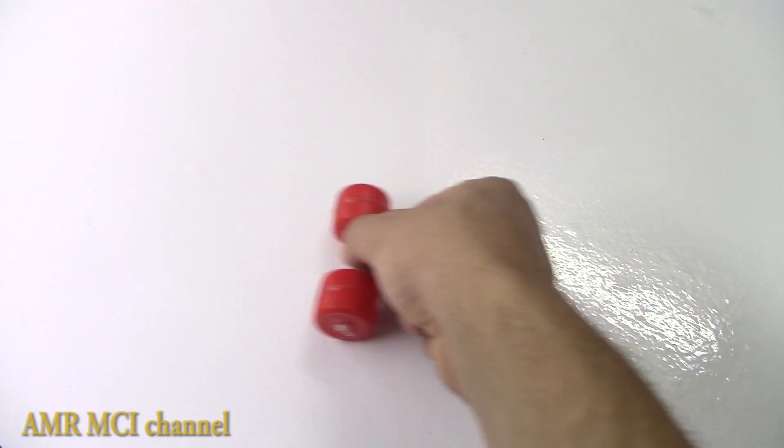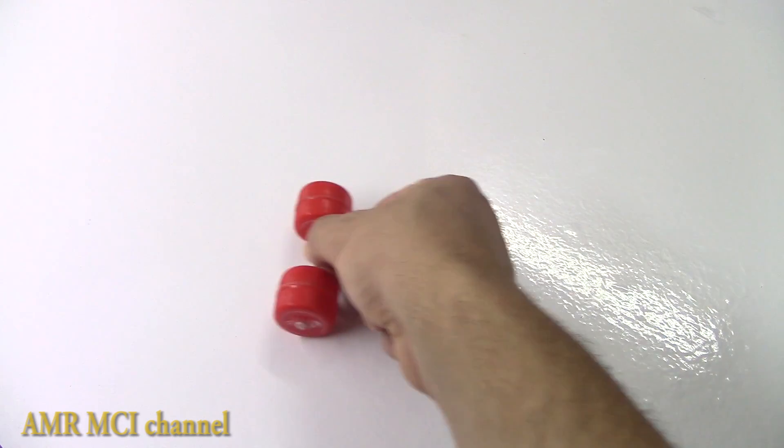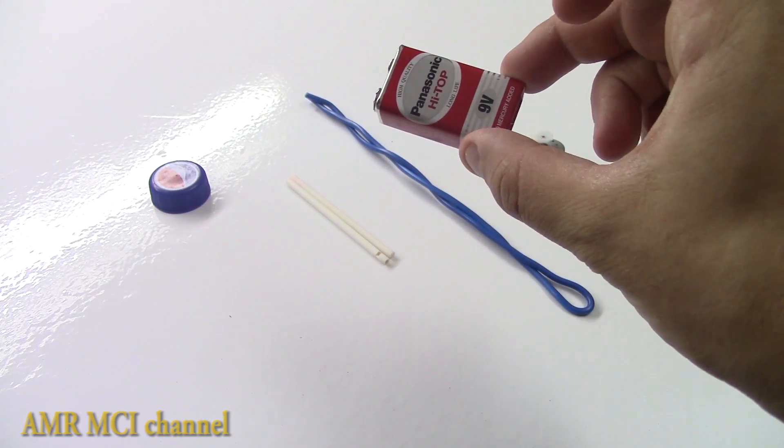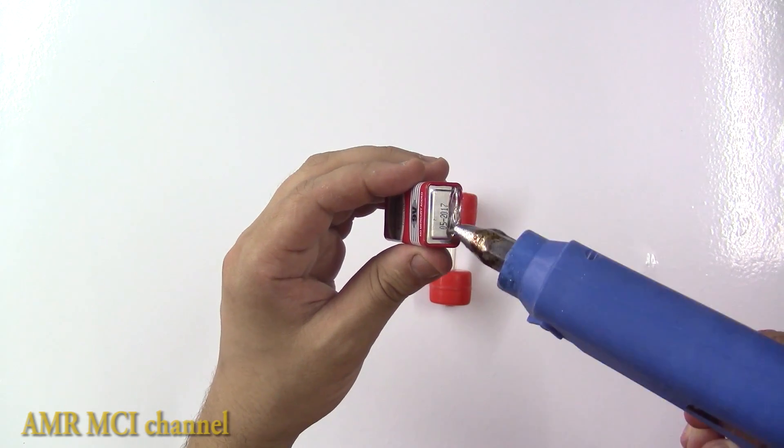This is going to be the front wheel. Now take a 9-volt battery and glue the front wheel here at the edge.